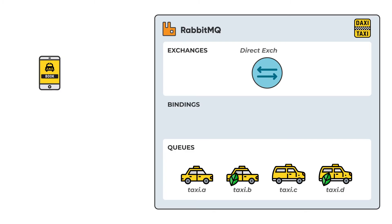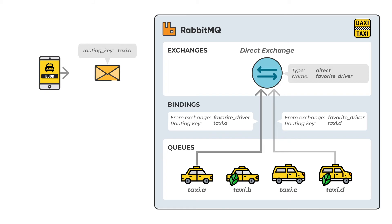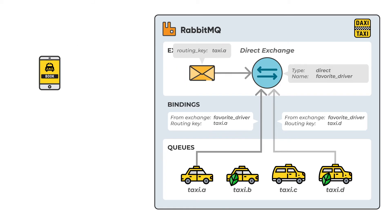Direct exchange directs the message to a specific queue by looking at the routing key. The routing key in the message is compared for equality with routing keys on bindings. In our example, the direct exchange is used when a user requests a specific taxi, like their favorite driver.